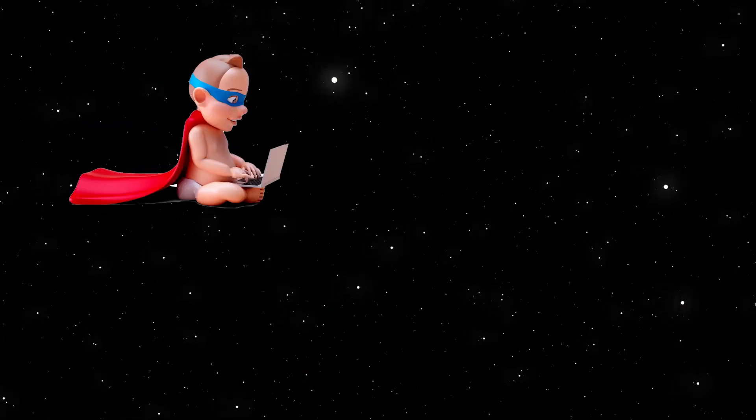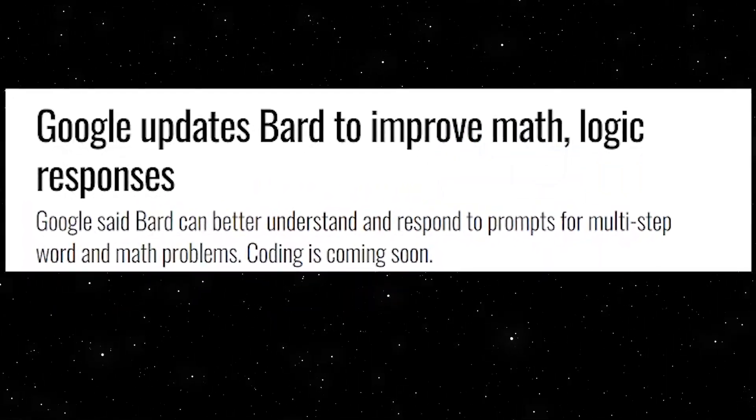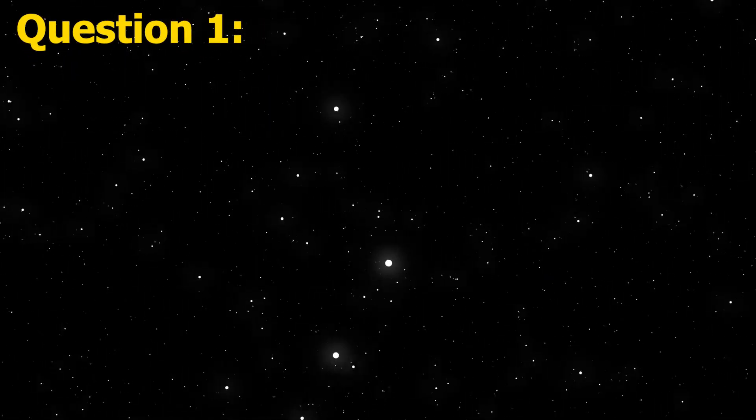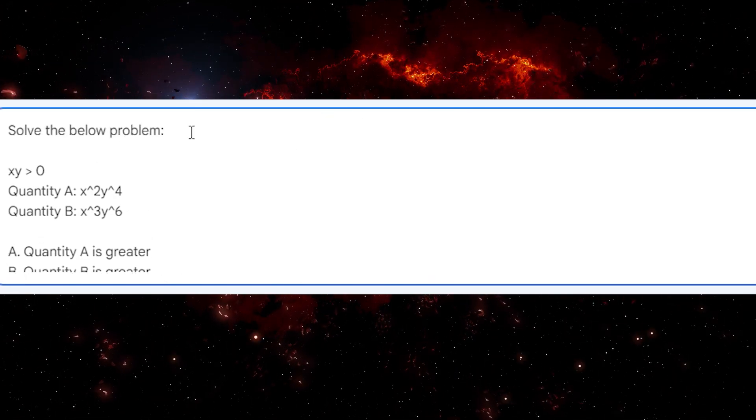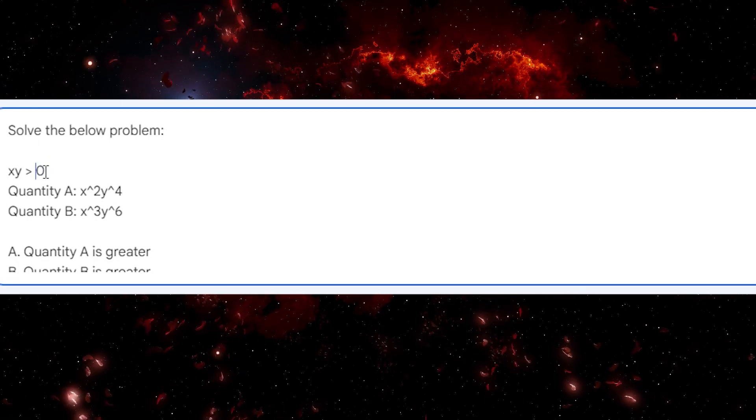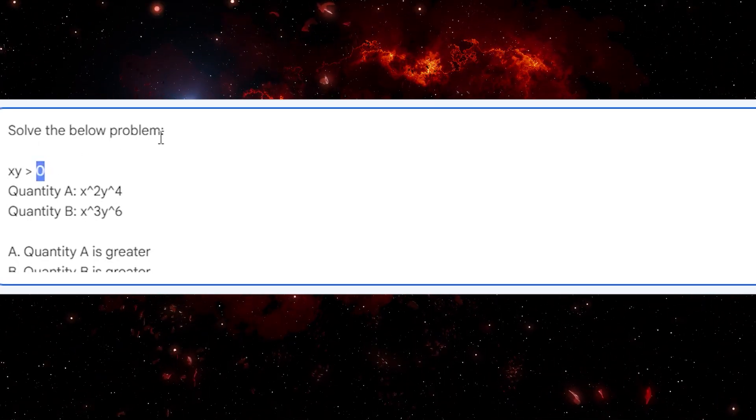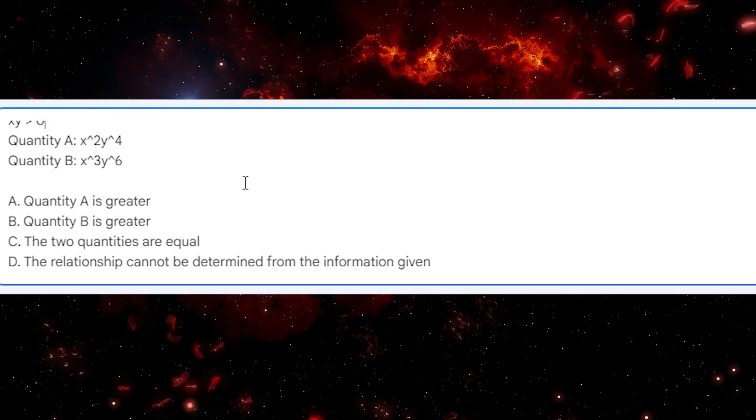For our first question, let us start with the newcomer BARD, which is supposed to have improvements in the old math and logics department. So here's the problem. XY has got to be greater than zero. Quantity A is X squared and Y to the fourth. And quantity B is X cubed and Y to the sixth. And then the objective is to determine which is greater, equal, or the relationship can't be determined.